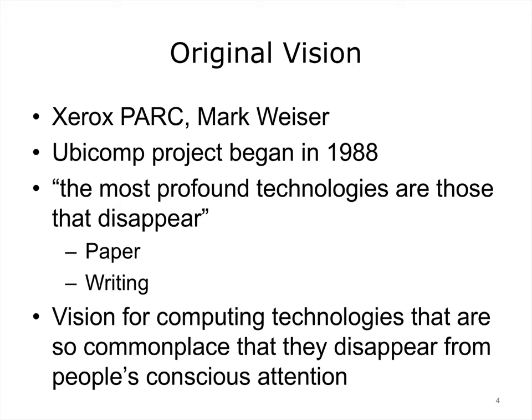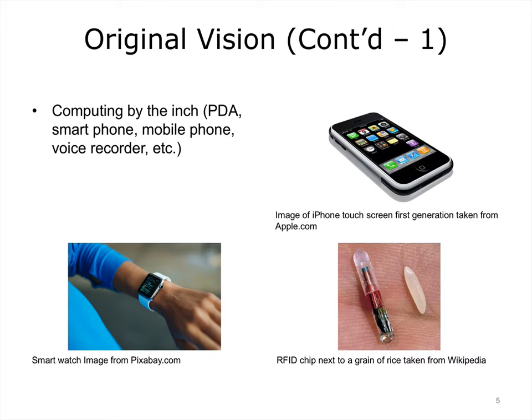Weiser's observation was that the most profound technologies are those that disappear. In the paper, he discusses such technologies as paper or writing, which became so universally accepted that millions of individuals rely on them without ever questioning their existence. His vision for computing technology was that it will achieve a similar level of penetration into the very fabric of human life and will become so commonplace that it will disappear from people's conscious attention. To achieve this vision, Weiser proposed that computing power becomes available in different shapes, forms, and ergonomic factors.